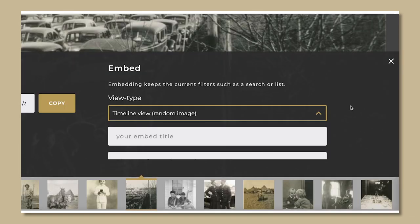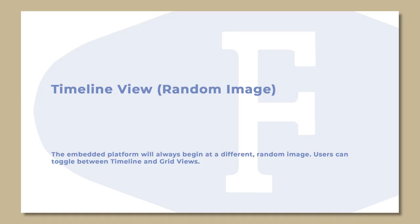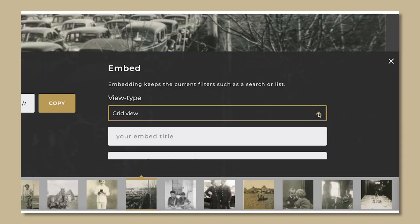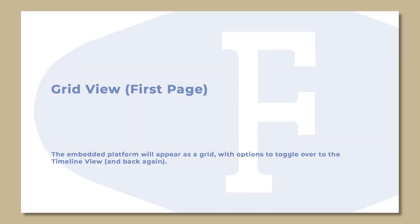Timeline view, a random image: the embedded platform will always begin at a different random image. The embedded platform will appear as a grid with options to toggle over to the timeline view and back again.